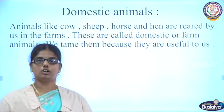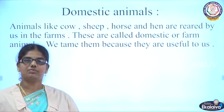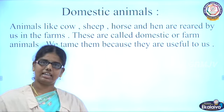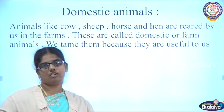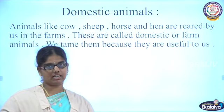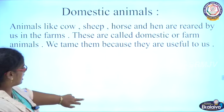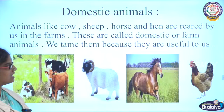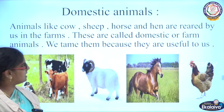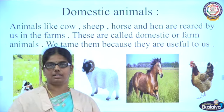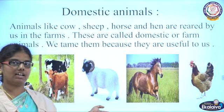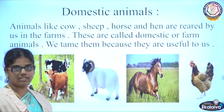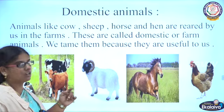Next we are going to see domestic animals. These are the animals which we tame, otherwise called farm animals. We take care of them and they are useful to us. Animals like cow, sheep, horse, and hen are kept by us on the farms. These are called domestic or farm animals. They are very useful for us.